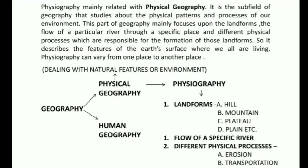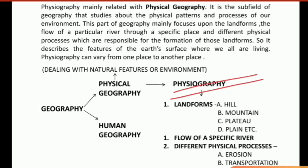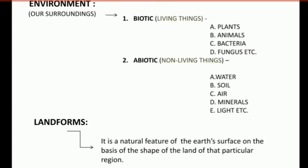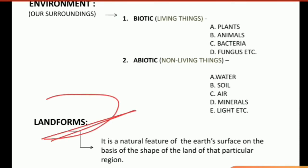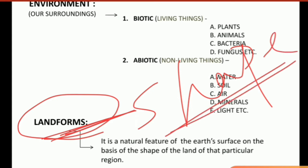Physiography is mainly related with landforms. We have several kinds of major landforms like hills, mountains, plateaus, and plains. But what is a landform? From the term itself you can get the idea — land and forms. Forms simply means shape. So the shape of a particular land is known as a landform. It is a natural feature of the earth's surface recognized on the basis of the shape of the land of that particular region.